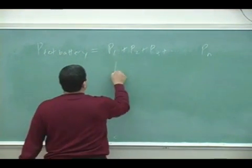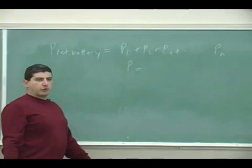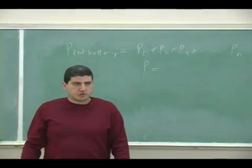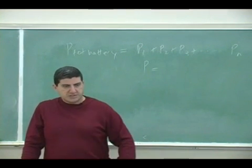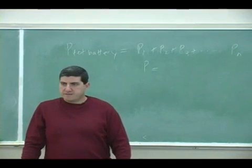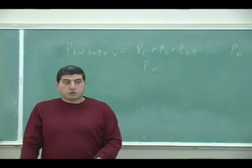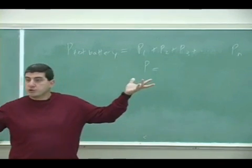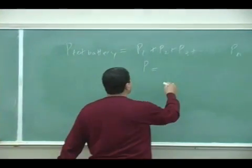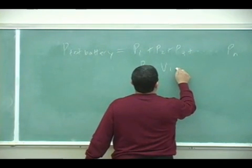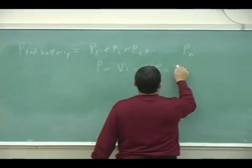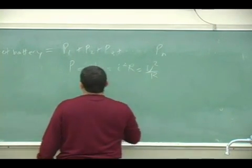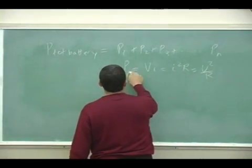What formula can you use for the resistor to find the power? Well, we did it last on Monday, right? It's like Vi or I squared R or V squared over R, depending on which one you know, which of them is the easiest. Well, this is the p for the resistors, p sub R.